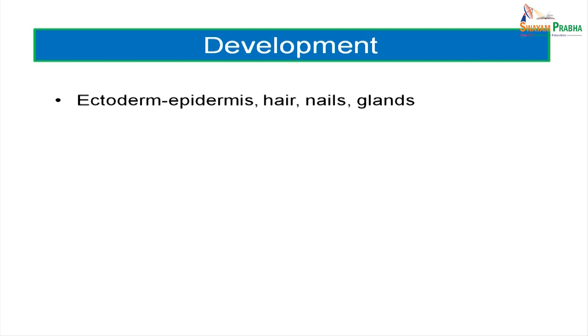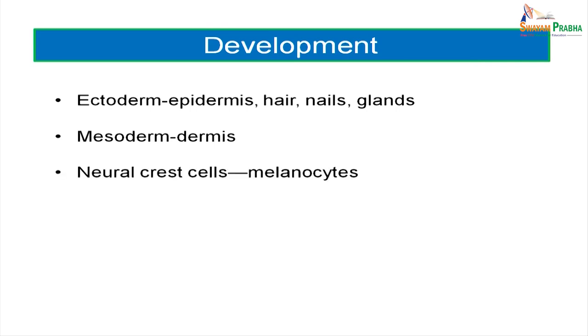A few words about development. Various aspects of skin develop from different germ layers. From the ectoderm: epidermis, hair, nails, and associated glands. From the mesoderm: the dermal portion of the skin. From the neural crest cells: the melanocytes. The only germ layer which does not give rise to any part of the skin is the endoderm.